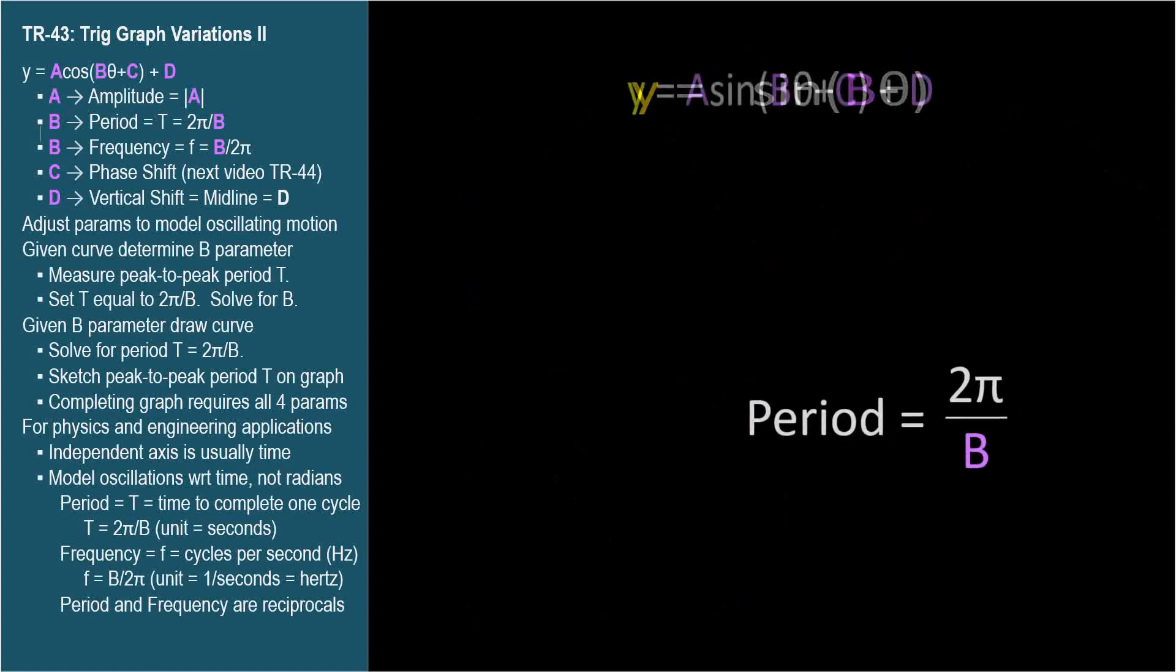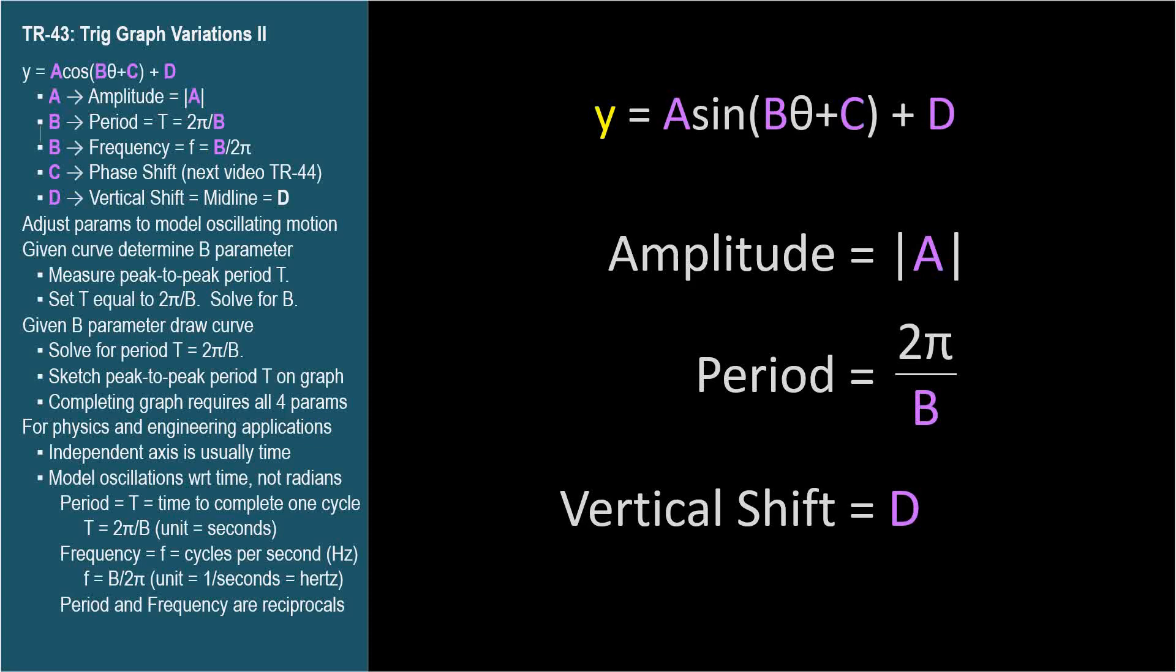So now we can quickly summarize our definitions based on the parameters we've covered. The amplitude is the absolute value of the a parameter. The period is 2 pi divided by the b parameter. And the vertical shift is simply the d parameter, also called the midline.